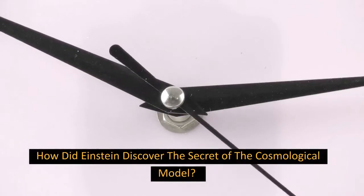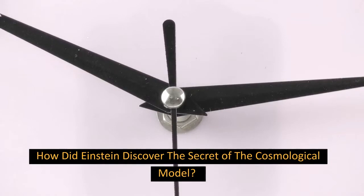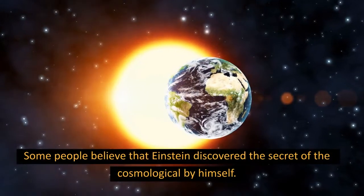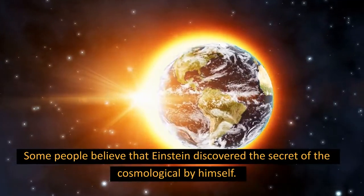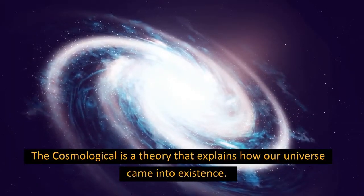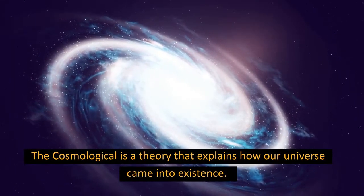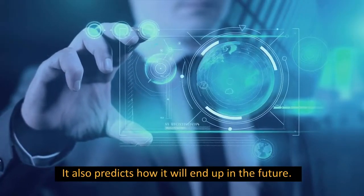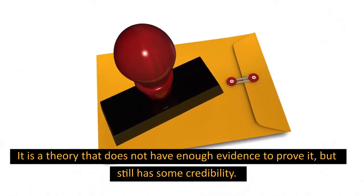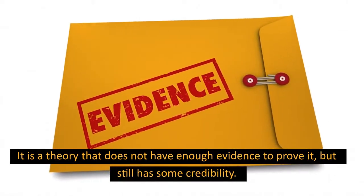How did Einstein discover the secret of the cosmological model? Some people believe that Einstein discovered the secret of the cosmological by himself. The cosmological is a theory that explains how our universe came into existence. It also predicts how it will end up in the future. It is a theory that does not have enough evidence to prove it, but still has some credibility.